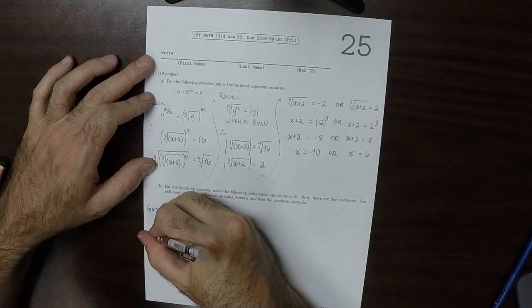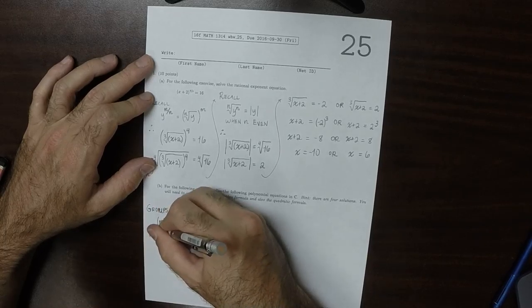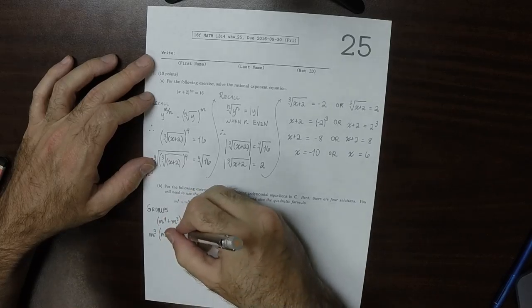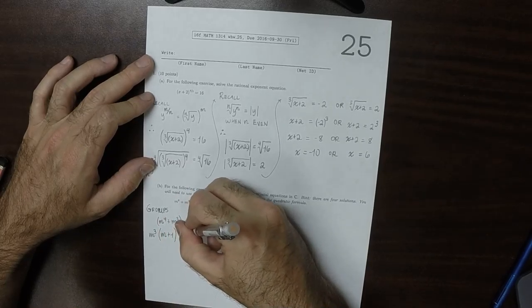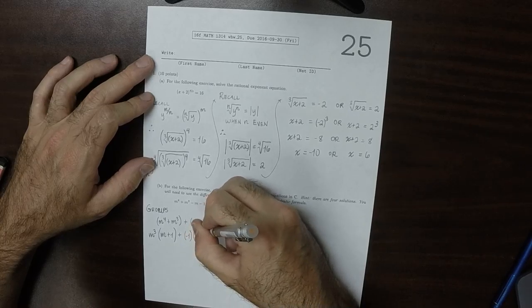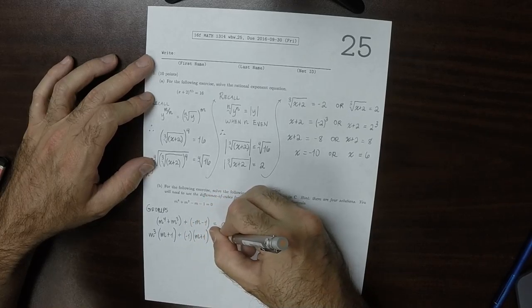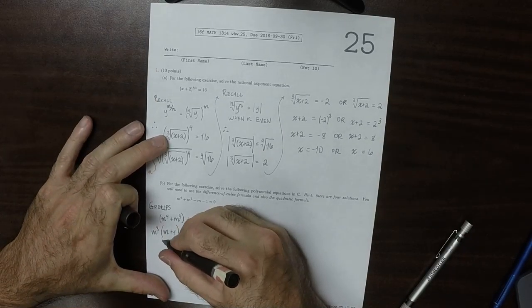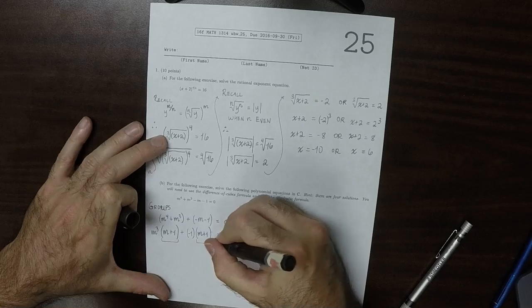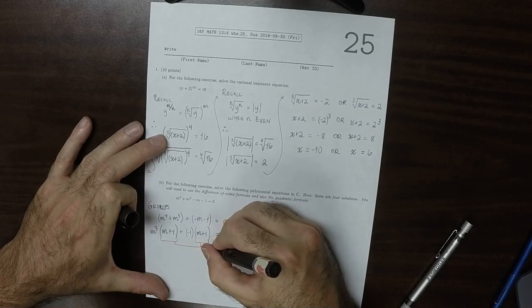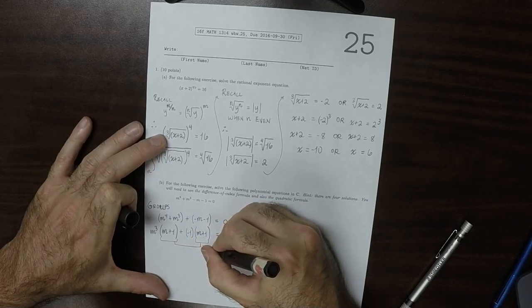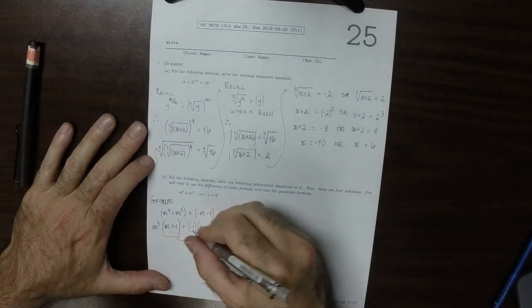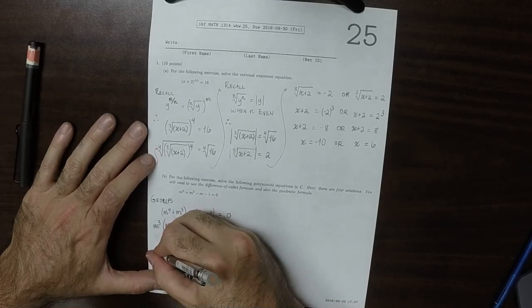In each group, we'll factor out the greatest common factors. So m cubed out of the first group, and that would be m plus 1. And then negative 1 out of the second group, and that leaves m plus 1. We can see that m plus 1 appears in both positions. We're so happy about that, because that means we probably did what was expected.